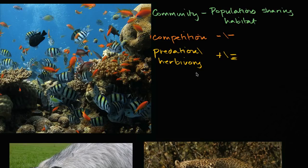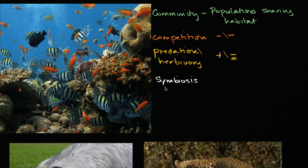The next types of interactions involve long-term, fairly intimate interactions, where organisms often live with each other or even on each other. The general term for organisms that have these long-term, intimate interactions is symbiosis. In everyday language, symbiosis is often used to mean organisms benefiting each other, but technically symbiosis includes cases where they might hurt each other, or where one benefits while the other is indifferent.